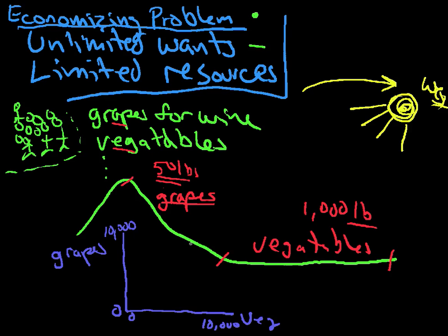If you used all your land for grapes — and this hill is great for grapes, you could get 2,000 pounds per acre — you could grow 10,000 pounds of grapes. That would be that dot there. If you grew everything vegetables, you could grow maybe 12,000 pounds of vegetables — that dot over there. So if they used all their resources for grapes, they get 10,000 pounds; if all for vegetables, they get 12,000 pounds.